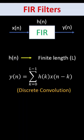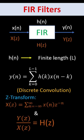For an FIR filter, its impulse response h(n) is of finite length and its Z-transform H(z) gives us the transfer function of the system.